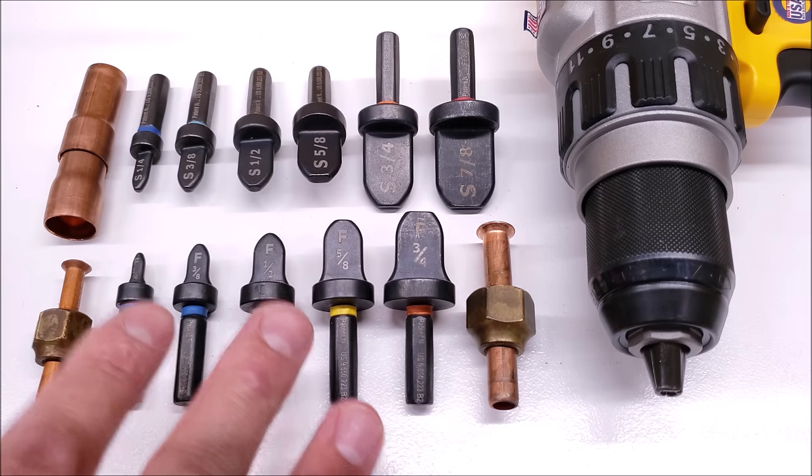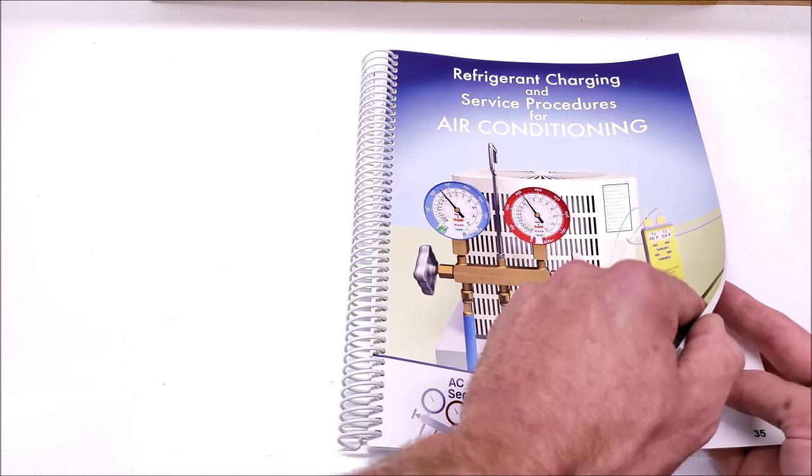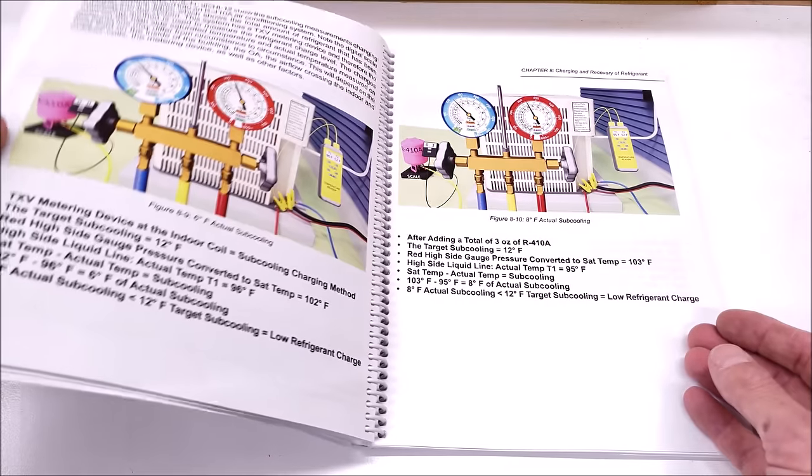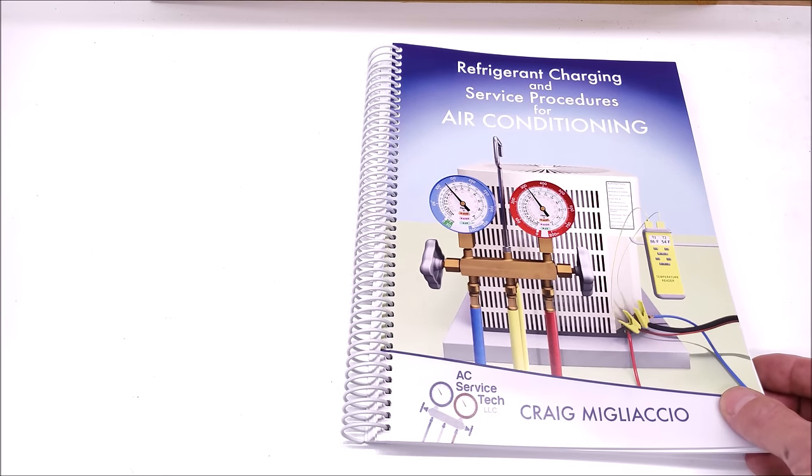Remember that we have these tools linked down in the description section below and make sure to check out our paperback and also ebook, The Refrigerant Charging and Service Procedures for Air Conditioning. In this book we go over the different types of metering devices, checking the refrigerant charge and also troubleshooting. This book is available over at Amazon.com and also at our website at ACServiceTech.com.